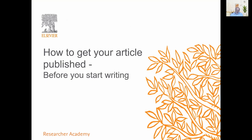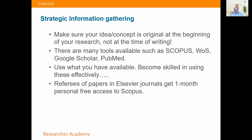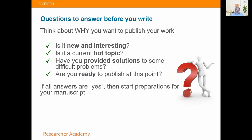Before you start writing, you've got to work out what's out there — you don't want to write something to find it's already been done. So do strategic information gathering: go online and search in Scopus, Web of Science, or PubMed. Record articles you don't know, read them through, and decide if you'll use them in your references. Before you start, ask yourself: Why am I doing this? Is it new? Is it interesting? Is it a hot topic? Has it given solutions to problems others said couldn't be solved? When everything is explainable and you've done any extra experiments needed, that's when you can start preparing your manuscript.